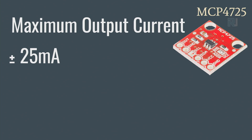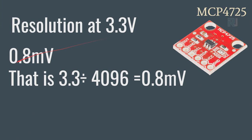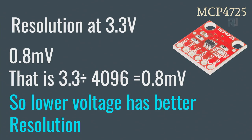The maximum output current you can draw from the output pin is plus or minus 25 milliamps — keep that in mind, it's very important. The resolution at 5 volts is 1.2 millivolts, calculated as 5 volts divided by 4096 steps. At 3.3 volts the resolution is 0.8 millivolts (3.3 divided by 4096). The lower the voltage, the better the resolution you get.